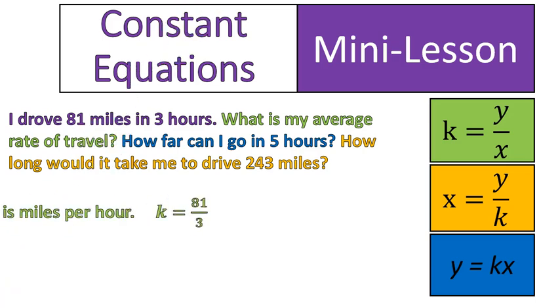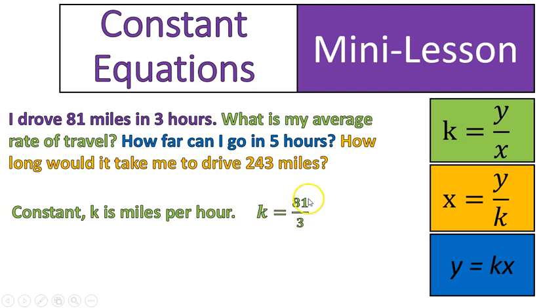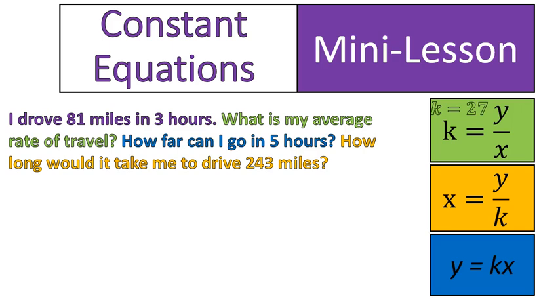The first question. Constant is miles per hour. My rate of travel k is equal to y divided by x, miles divided by hours. So you can know by this equation that my miles is going to be the y value, my dependent variable, and hours are going to be my x value, or the independent variable, just by the way we set this up. Anyway, let's go on. 81 divided by 3 is equal to 27. So I am driving 27 miles per hour. That is my rate. That's a constant. It will not change. 27 miles per hour. I'm going to put that up there inside the green box.